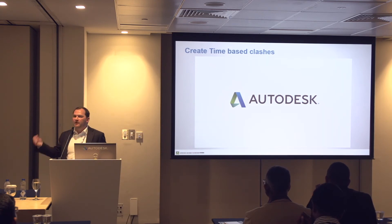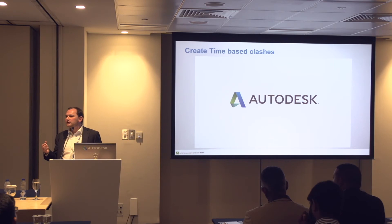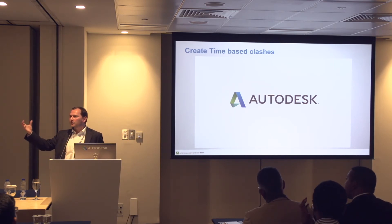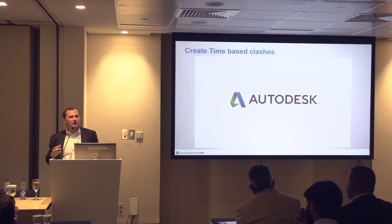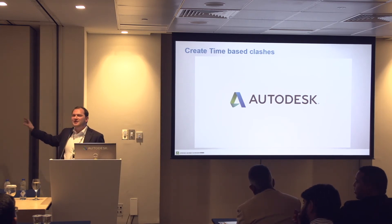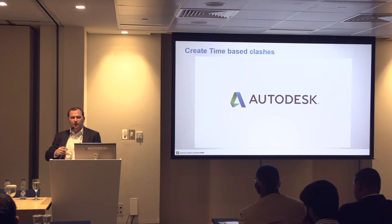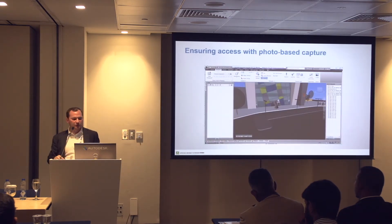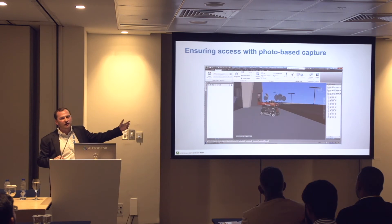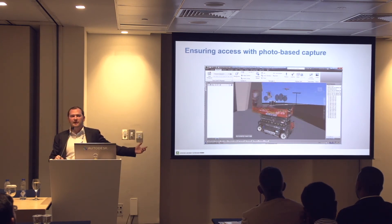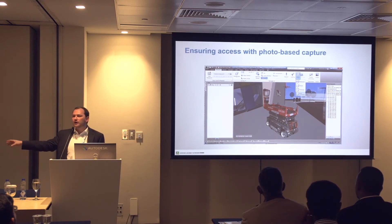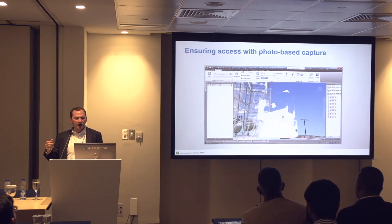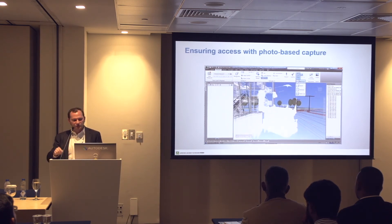We've taken this one step further with photogrammetry — taking lots of photos and creating a 3D model from them. In this example — I only took about 20 photos, but in reality you want about 40 plus — you take one or two measurements of the object, it goes into the cloud, creates a 3D model. You can then bring that back into Navisworks and do exactly the same time-based clash detection. Rather than having somebody spend the day doing modelling, they can just take a bunch of photos to create a 3D model, which then allows you to do that clash detection.